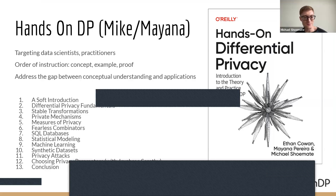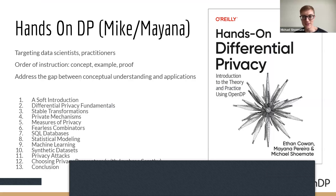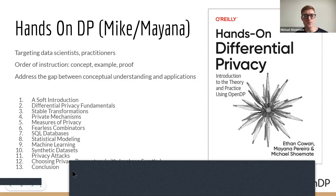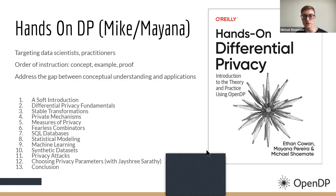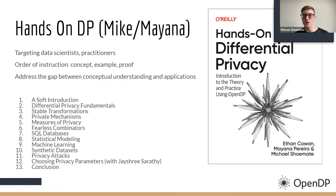I'm Michael Shumate. I'm a co-author of a book called Hands on Differential Privacy. My co-authors are Ethan Cowan and Mayana Pereira — Ethan at OpenDP and Mayana through Smart Noise at Microsoft. Generally speaking, we want to promote DP in the broader community and improve educational materials for practitioners. The book is targeting data scientists and practitioners, addressing the gap between conceptual understanding and applications.